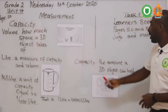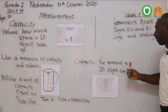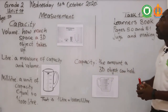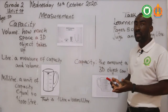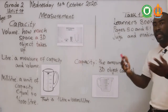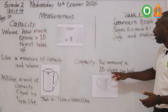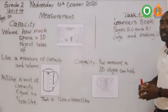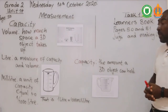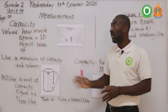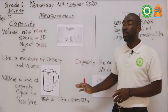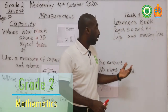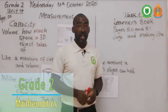So the actual meaning of capacity is the amount a 3D object can hold. When you combine everything together, you come to capacity — that is the total amount a 3D object can hold. So now we have known about volume, liter, milliliter, and capacity.